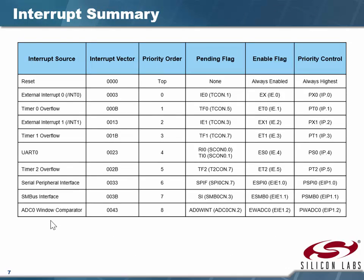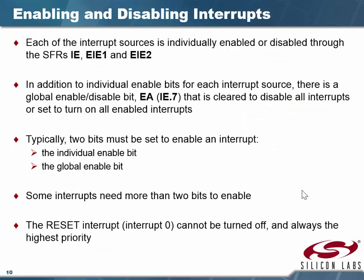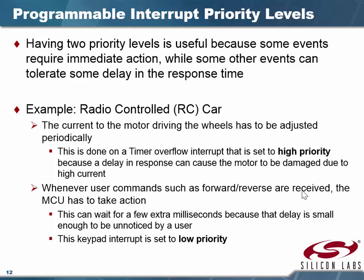This is the default priority table. You can always adjust priority to put an interrupt below all others. Having two priority levels: some require immediate action, such as a timer — a delayed response could cause motor damage — while others like forward/reverse can wait a few milliseconds. A keypad interrupt, for example, is set to low priority. We're talking microseconds for servicing these interrupts. With the same priority, the fixed priority order is serviced first.